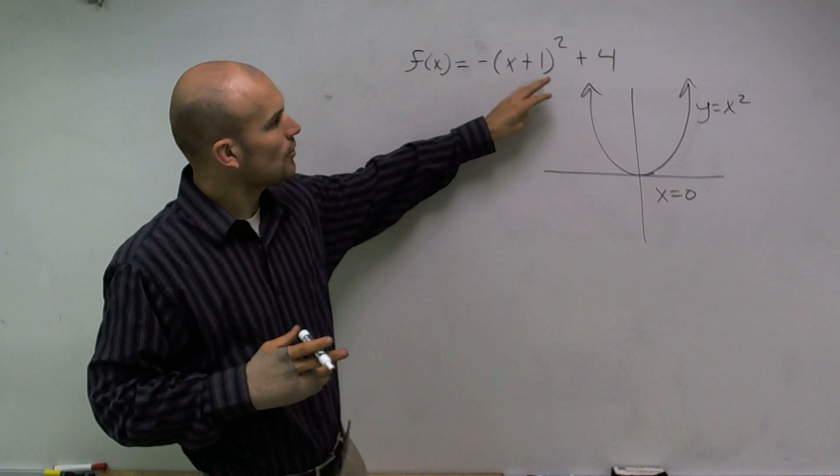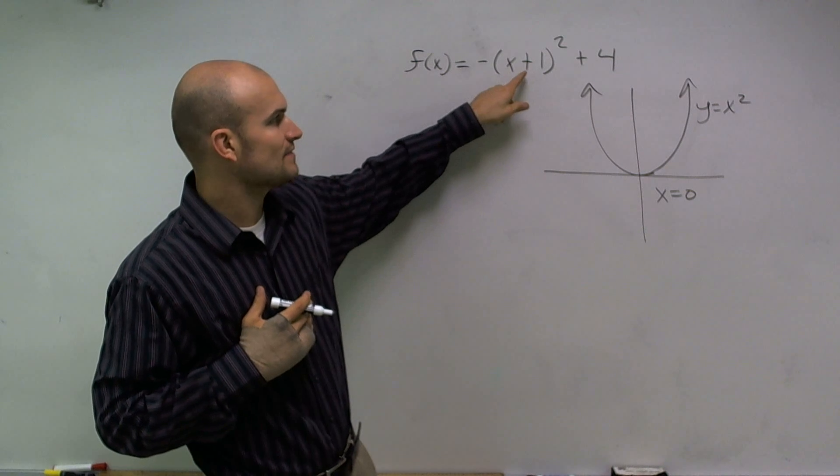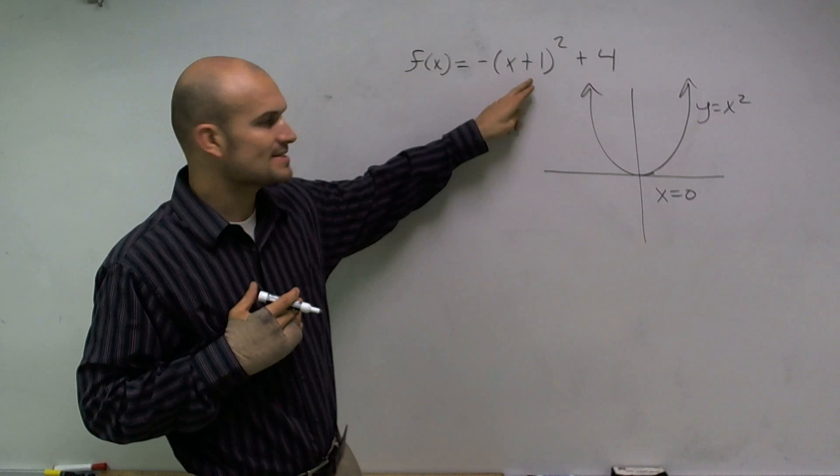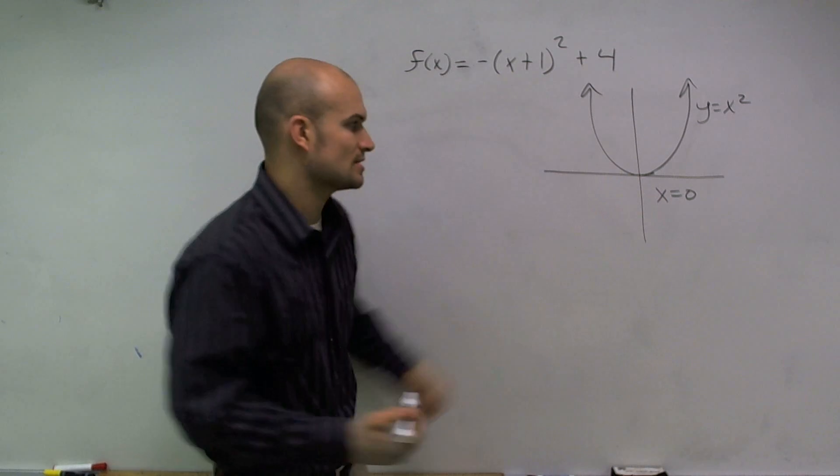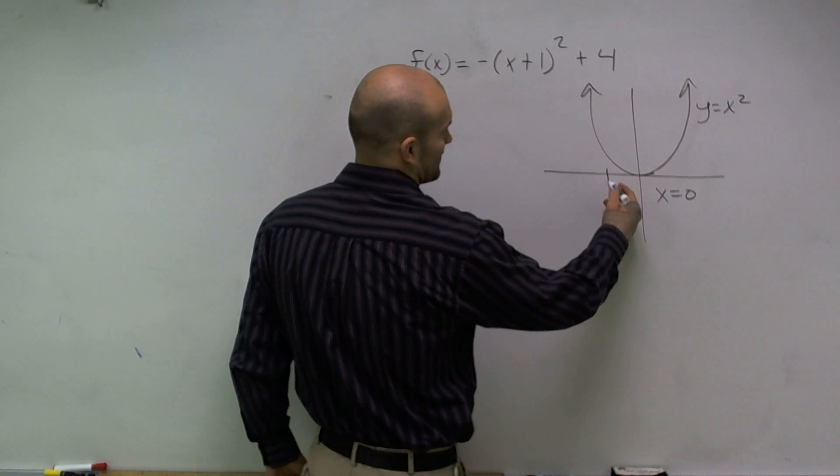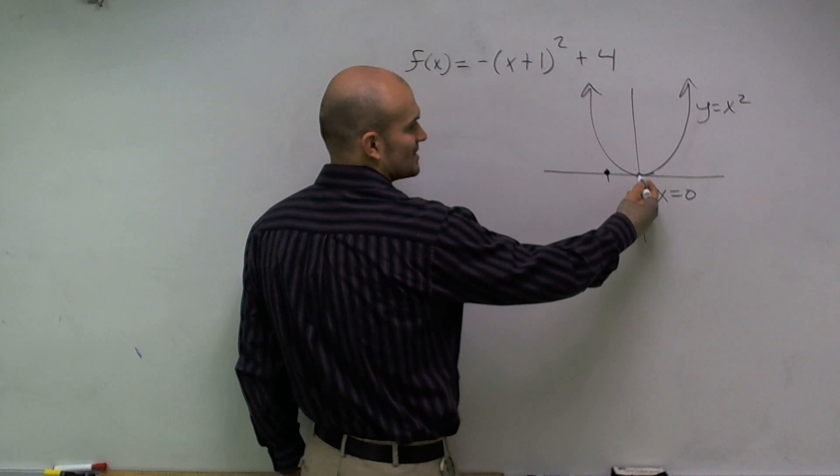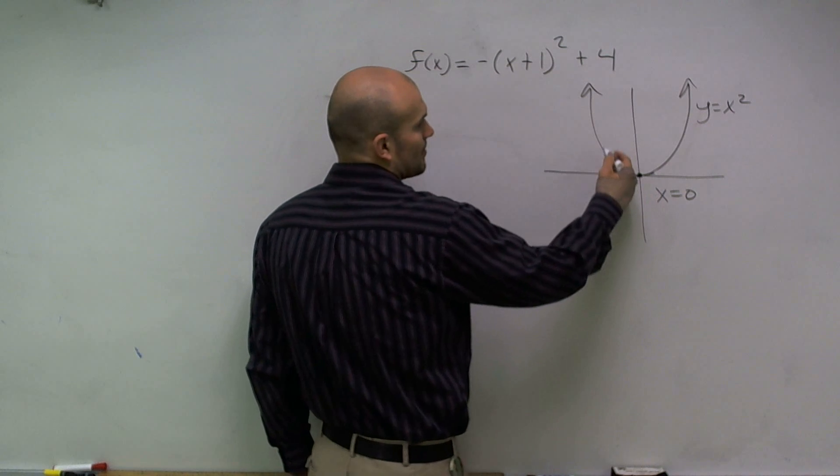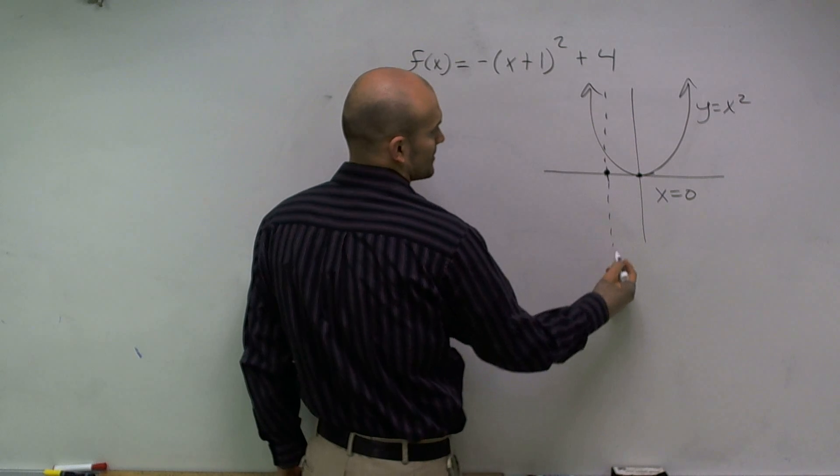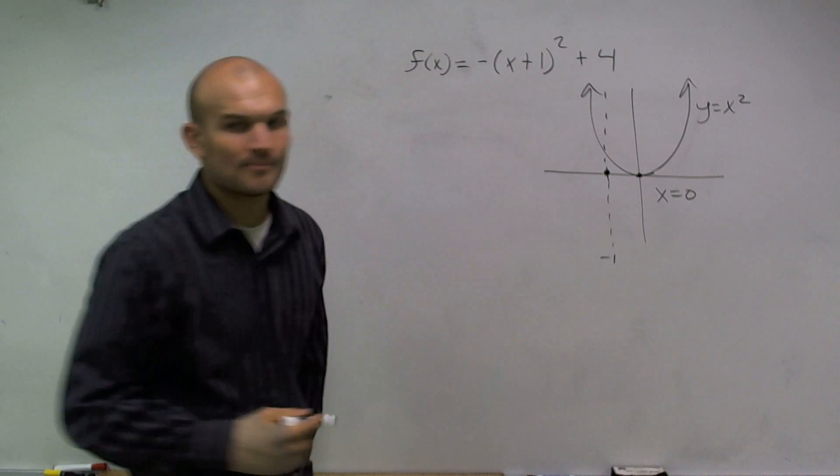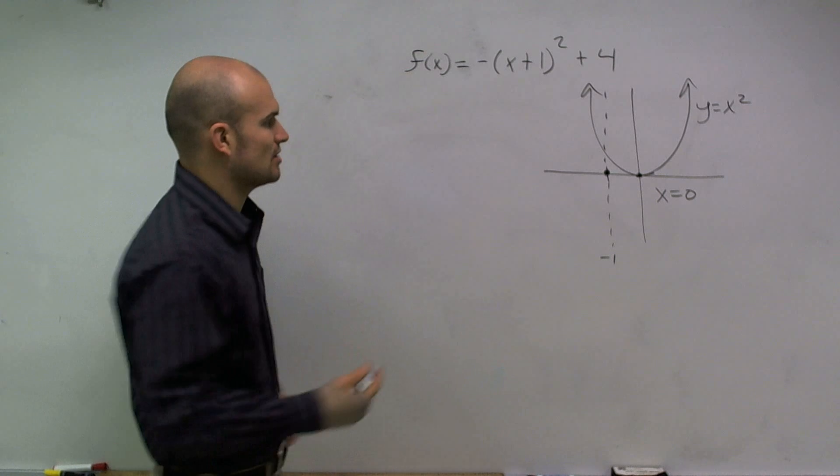So I know by knowing my transformations that this graph, since x plus 1, that tells me I'm going to shift my graph one unit to the left. So actually this graph is going to be shifted this unit. So therefore, since my vertex is on my axis of symmetry, my new axis of symmetry is at negative 1. Now, let's look at an algebraic way to solve this.